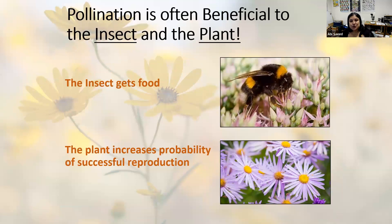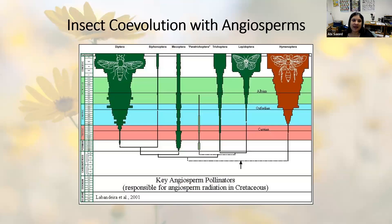Pollinators also provide food for a lot of wildlife that feed on plants or the products of those plants, like seeds, nuts, and fruits. Pollination is a mutualism most of the time, meaning both organisms get some benefit — the pollinator gets food and the plant increases its probability of reproducing successfully. We've also seen through the fossil record that as angiosperms or flowering plants started to diversify, there was a corresponding diversification of insect groups, including flies, butterflies and moths, and bees and wasps.